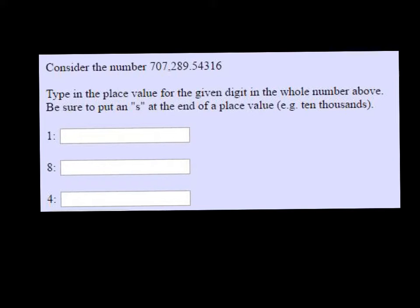Consider the number 707,289.54316. We want to type in the place value for the given digit in the whole number above. Be sure to put an 's' at the end of the place value.